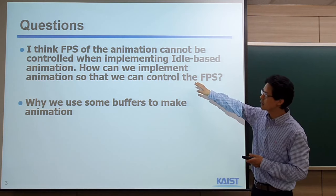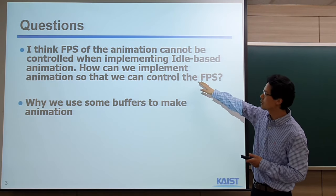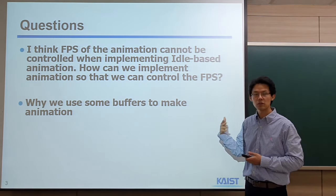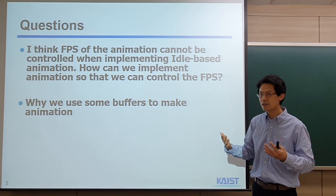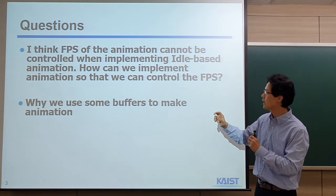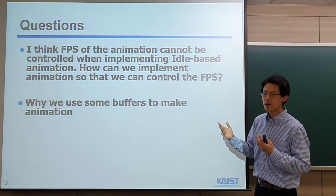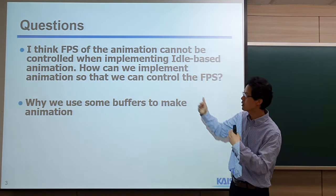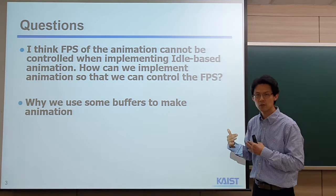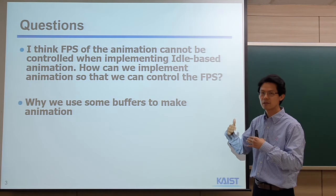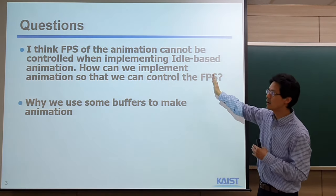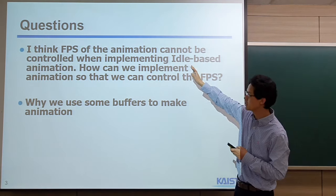One student thinks that the FPS of animation cannot be controlled when using idle-based animation. That's true. Basically, idle-based animation is that once the CPU is idle, we generate events so we can call the idle callback function. There is no mechanism to control FPS this way. Typically, games need to regularly provide 30 frames per second, so the idle-based approach cannot guarantee such a property.